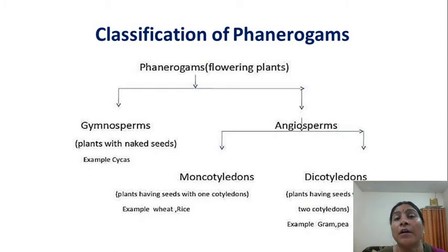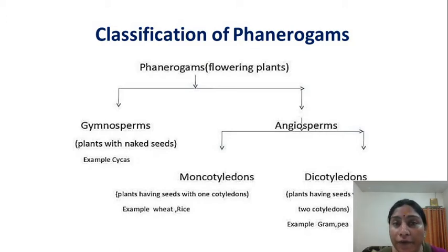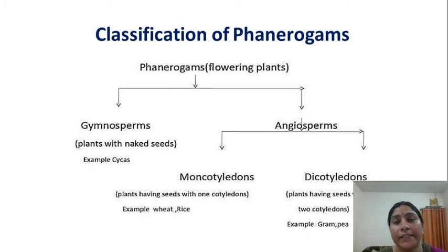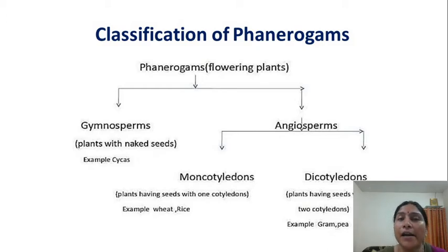The next group is the Angiosperms. Here also the word Sperma means seeds, but in Angiosperms the plants have seeds that are always enclosed within fruits. The distinct feature of Angiosperms is that seeds are always enclosed in the fruit. For example, custard apple has seeds but they are enclosed within the fruit.